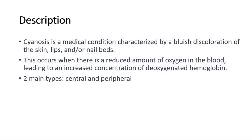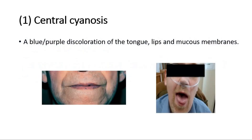There are two main types of cyanosis, which are central and peripheral cyanosis. First, central cyanosis is the blue or purple discoloration of the tongue, lips, and mucous membranes.